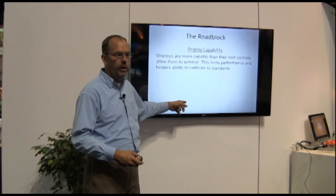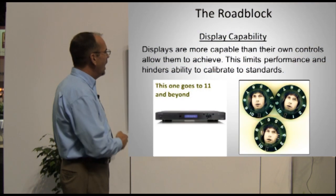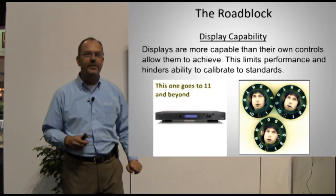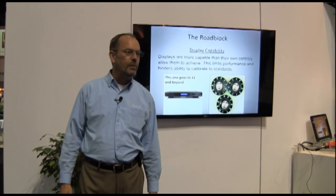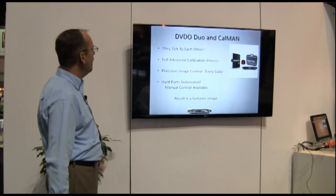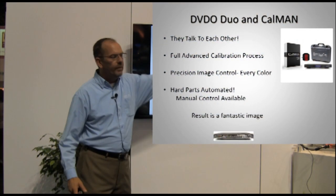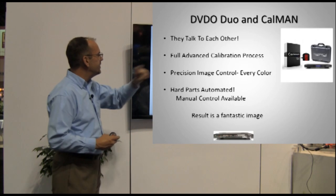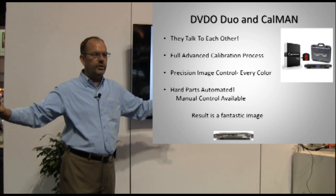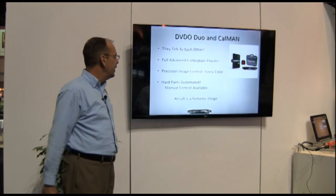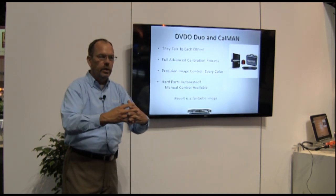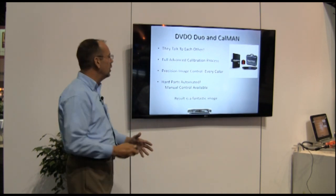In other words, this piece of glass will do more than the knobs and bells and whistles in the TV will let it do. However, when I introduce Duo into the system, these controls — like Nigel Tufnel from Spinal Tap told us — these go to 11. These will max out the capability of your display in about 10 minutes of solid work with the Duo and calibration. Calman software from SpectraCal and Duo talk to each other through a direct communication link, allowing for an advanced calibration process where the hard parts are automated. Push a button and grayscale calibration gets finished with errors so low the human eye could never see them — the result is a fantastic image.